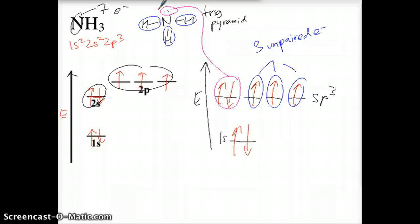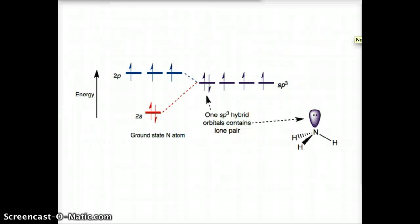These are sp3 hybrid orbitals. This video allows us to try to understand where they come from. In reality, what we need to know is if you know the geometry of a molecule, you need to be able to tell me what the hybridization is. Here's another diagram that shows the same thing for NH3. The s orbitals and the p orbitals hybridizing, mixing, to form the new sp3 hybrid orbitals where this represents the lone pair that we would see in the molecule.